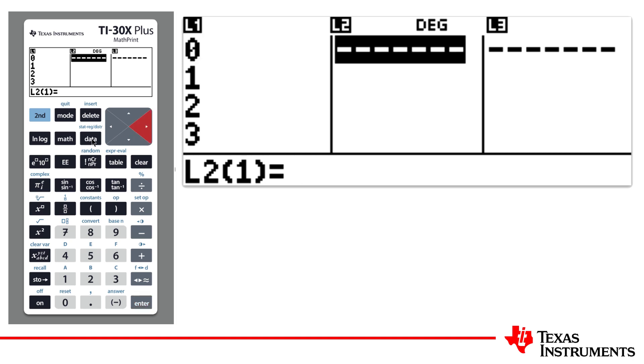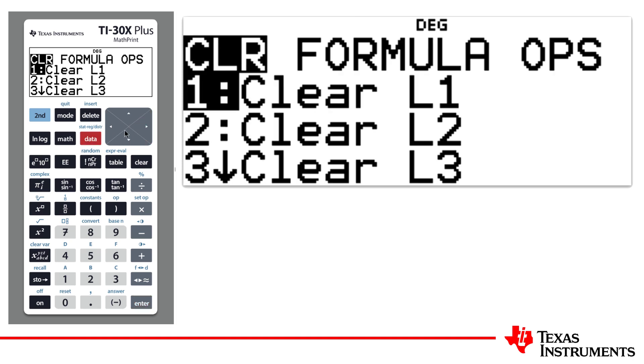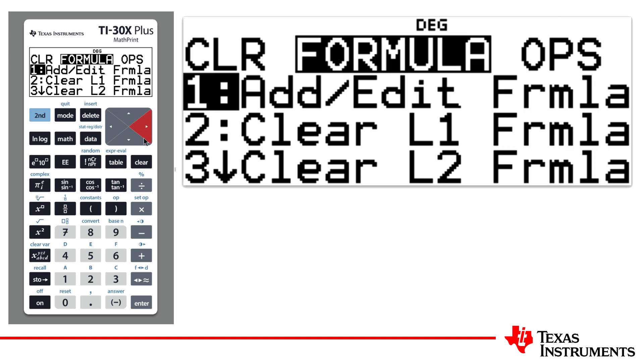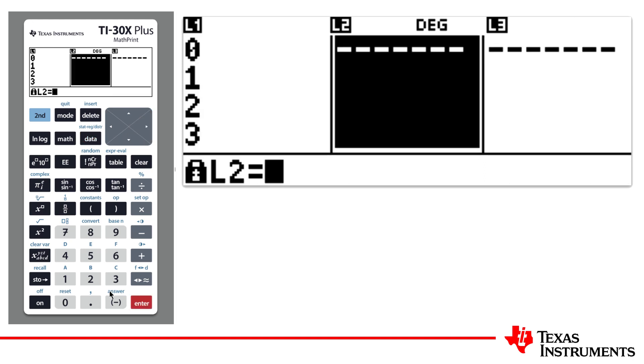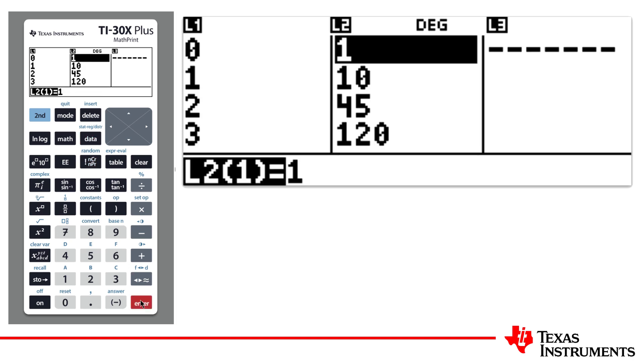With that sequence of numbers in list 1, I can use list 2 to generate all the binomial coefficients. Our formula is simple. We want to calculate 10c list 1. So, list 2 now contains results of 10c0, 10c1, all the way through to 10c10.